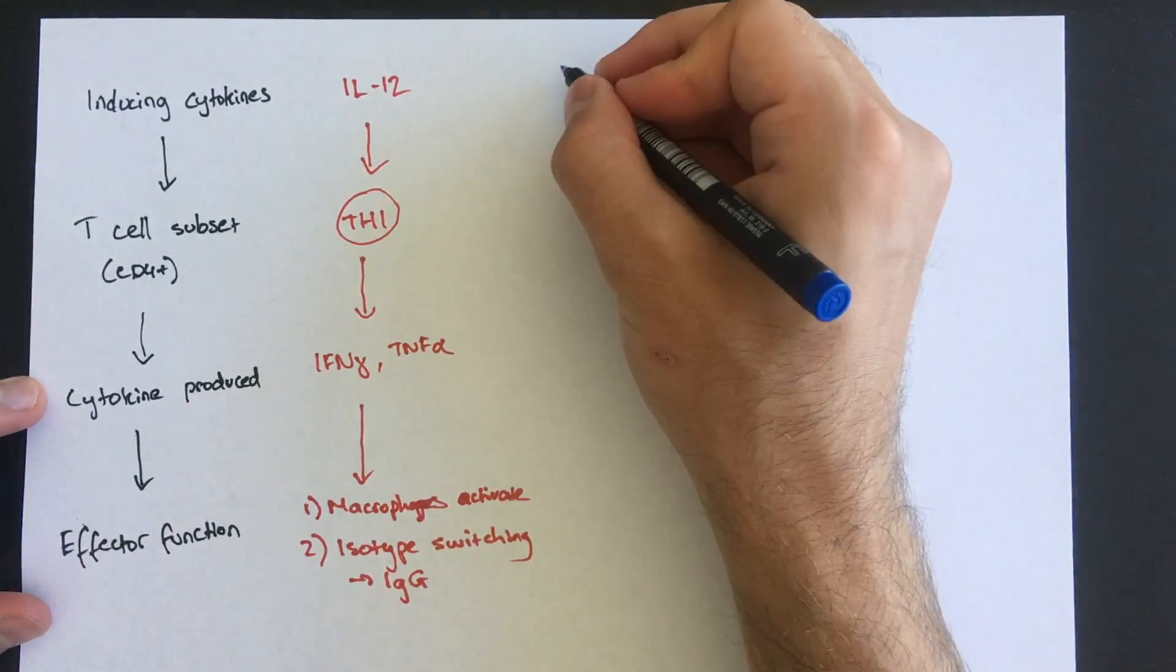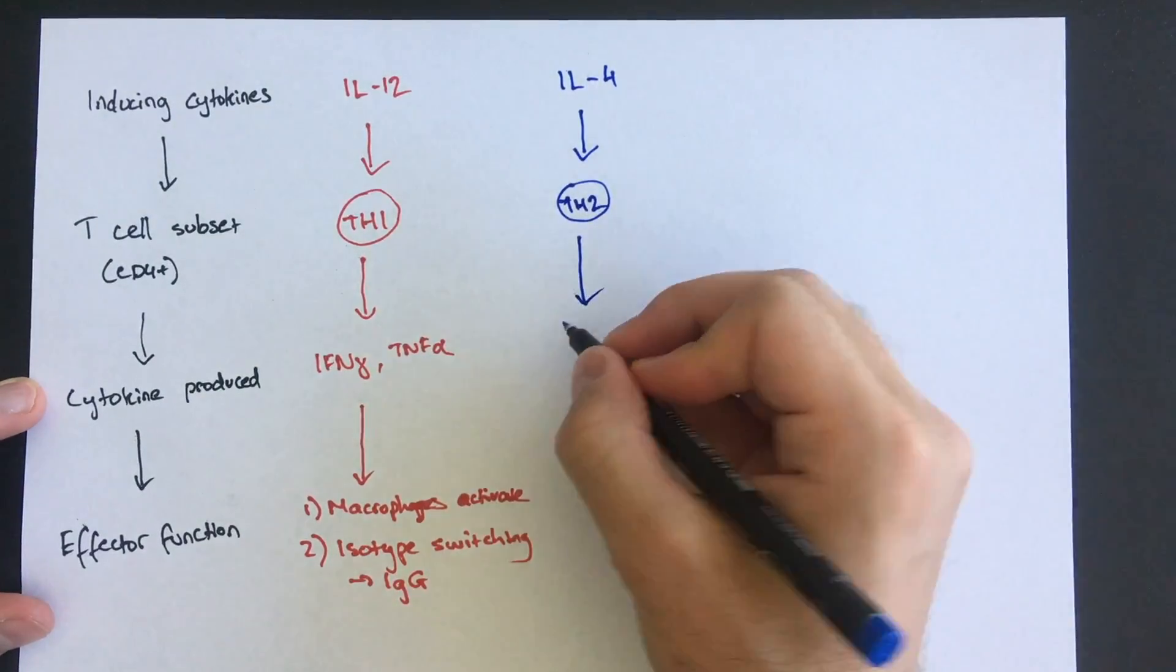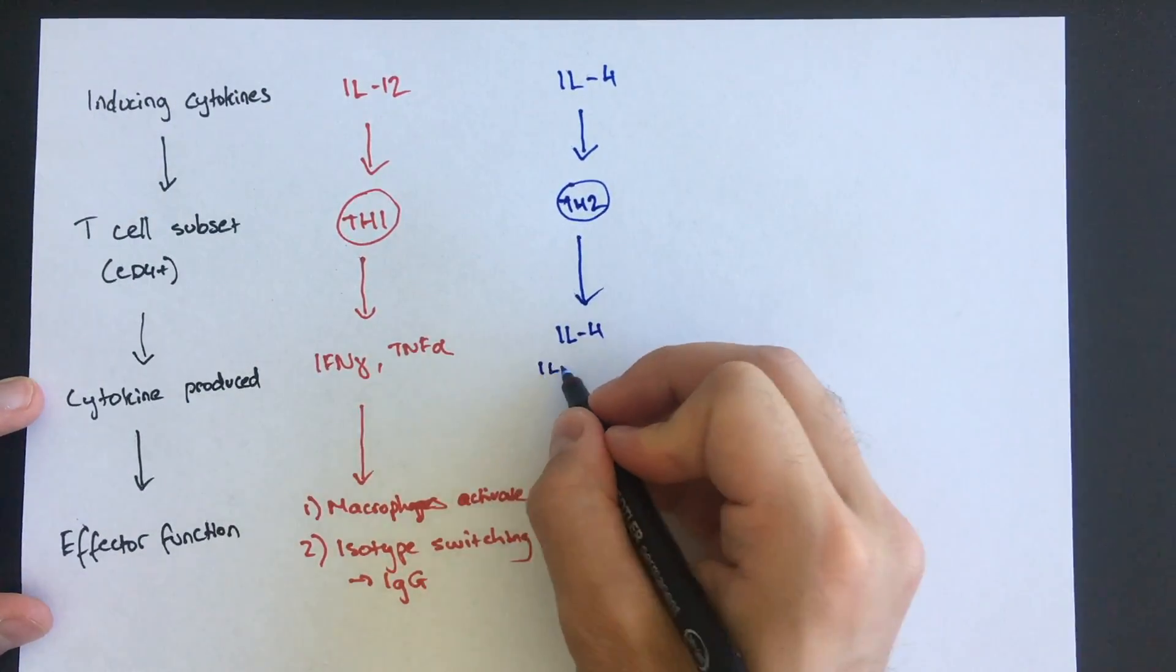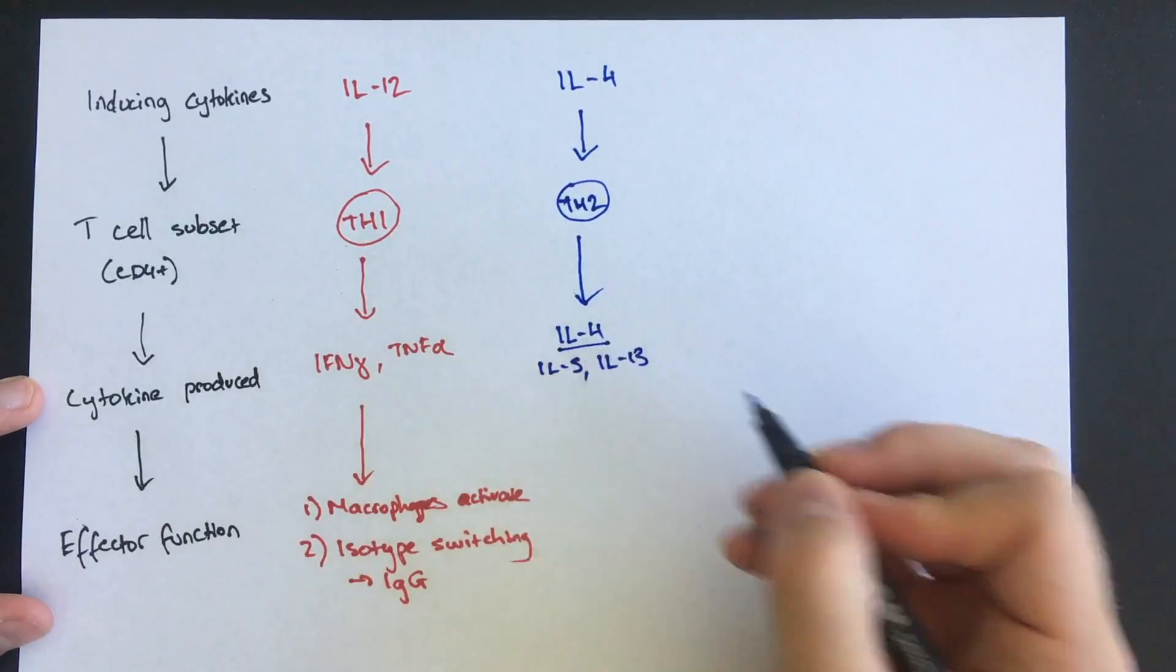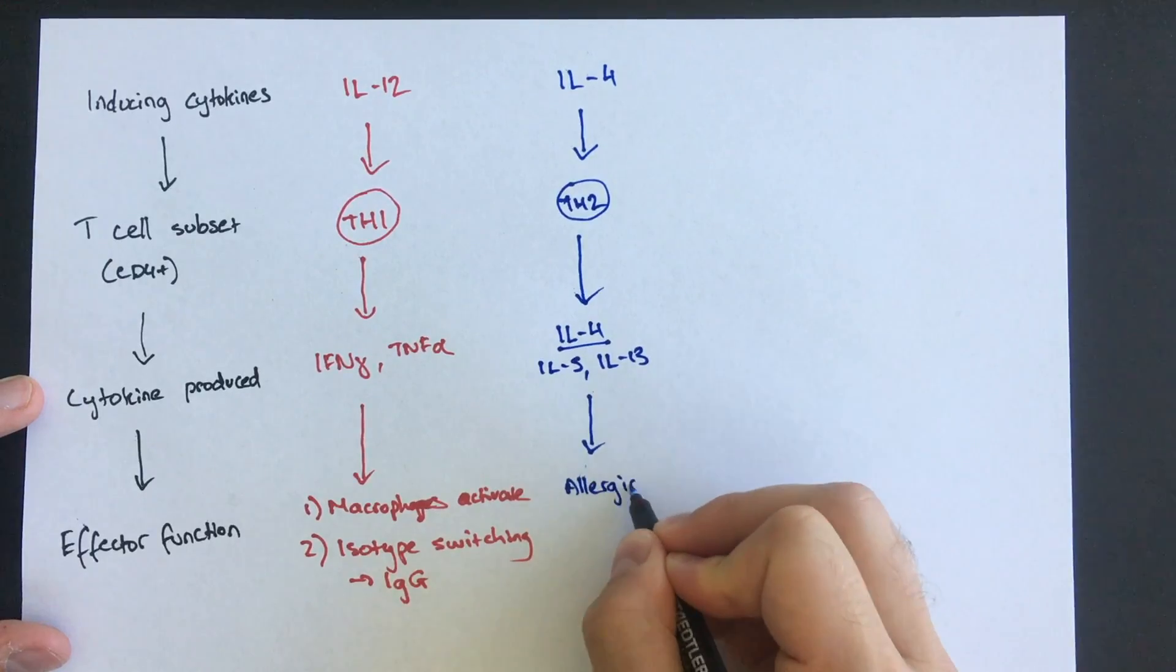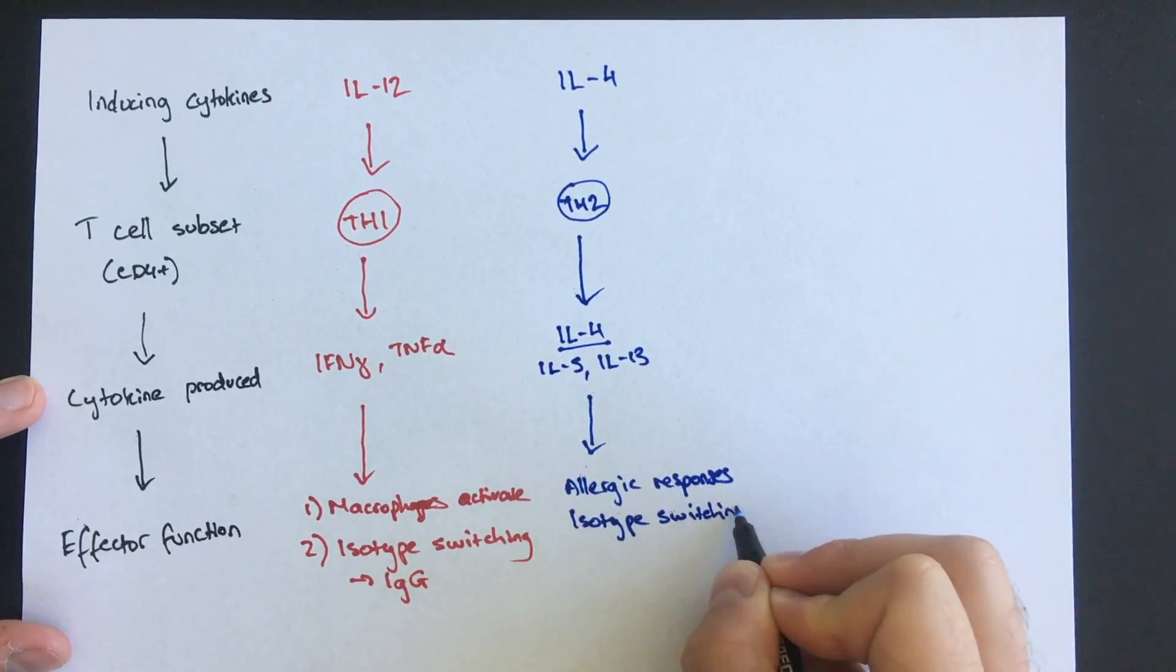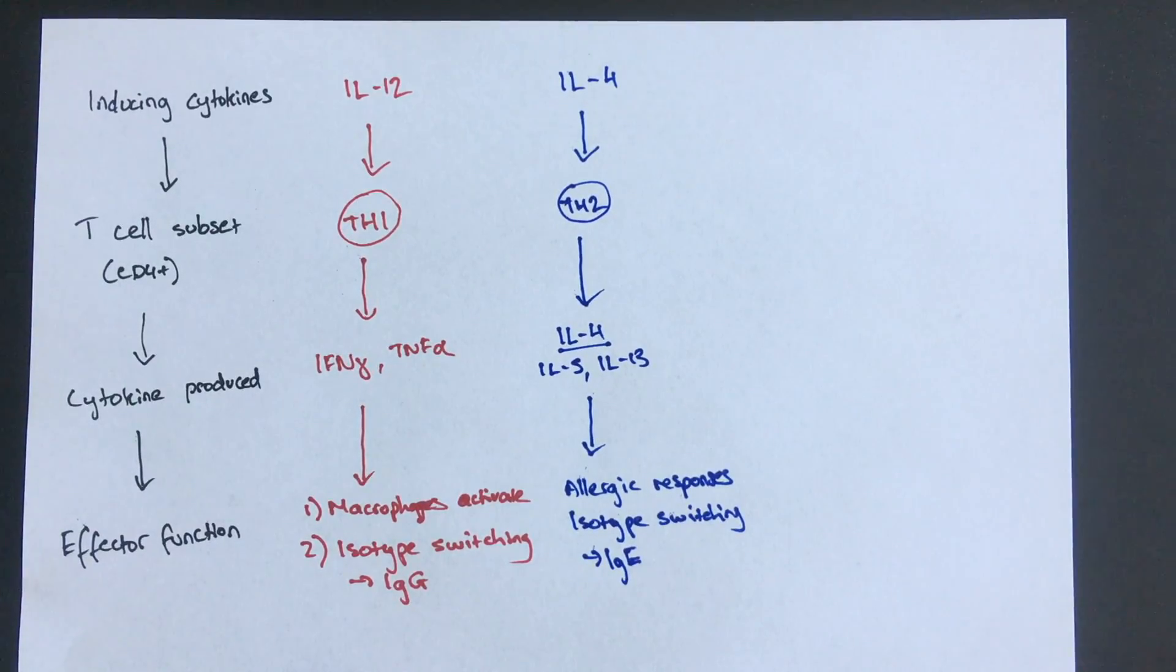Interleukin-4 will lead to differentiation into TH2 cells. These are heavily implicated in allergic responses as well as parasitic responses by releasing interleukin-4, as well as interleukin-5 and interleukin-13. Interleukin-4 stimulates B cells to isotype switch to IgE, which will bind to and sensitize mast cells.